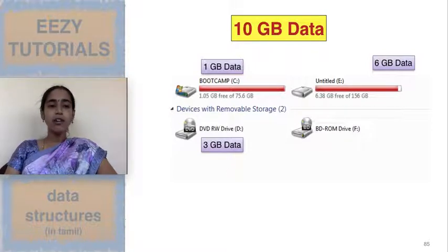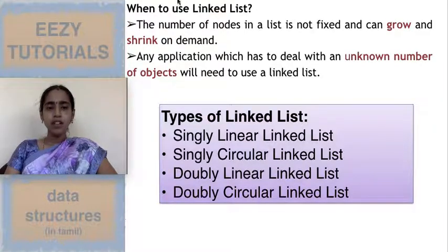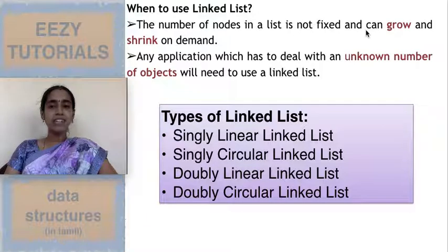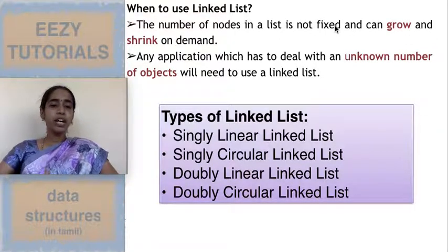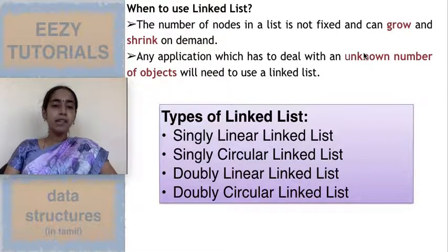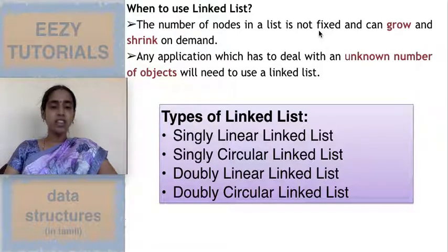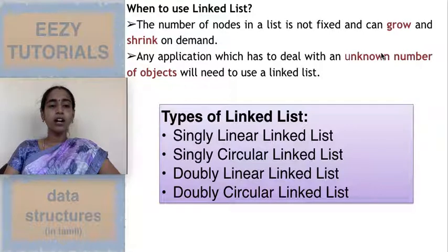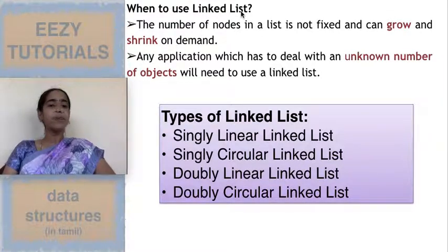For these types of scenarios I can use a linked list. I will use a linked list when the size of the list is not fixed — I don't know how many nodes there are, and the size may suddenly grow or shrink. For example, when taking admissions for first-year students, I don't know the strength: today three members may come, tomorrow five. Admissions are also cancelled, so the list shrinks. Since the number of objects is unknown and there is sudden growth or shrink, I can go for a linked list.